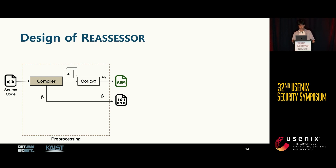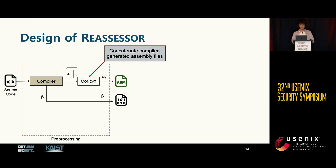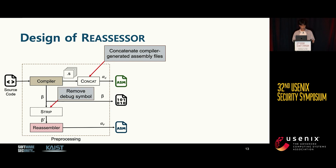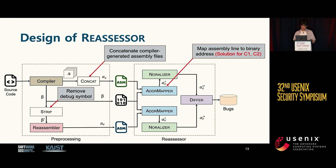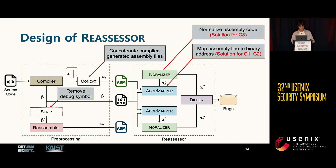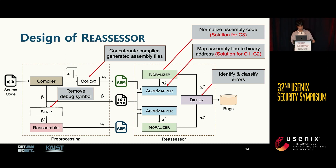With the proposed solutions, we present the design of Reassessor, which is our differential testing framework for reassemblers. First, the concat module merges all compiler-generated assembly files, and the strip module produces a stripped binary. The reassembly tool takes the stripped binary and produces assembly output. Then the address mapper module maps each assembly line to concrete binary addresses, applying solutions 1 and 2. The normalizer module transforms assembly expressions into canonical form using solution 3. Finally, the diff module takes the two normalized assembly files and returns a list of errors.